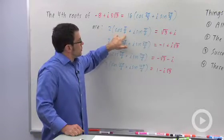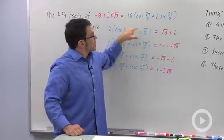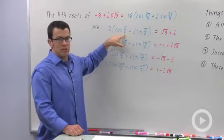To get the first root, I divide this number, 2 pi over 3, the argument, by 4, and I get pi over 6.